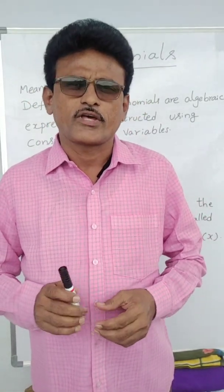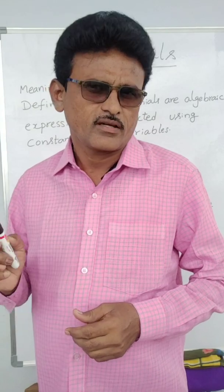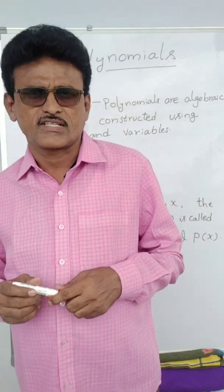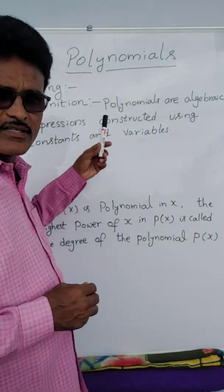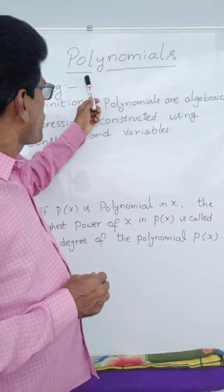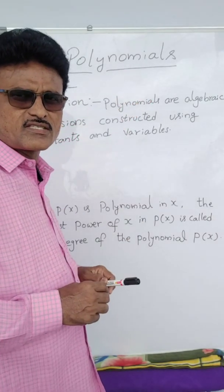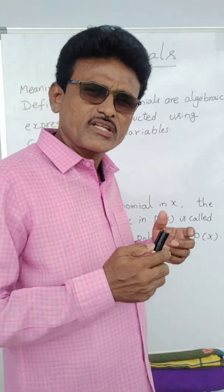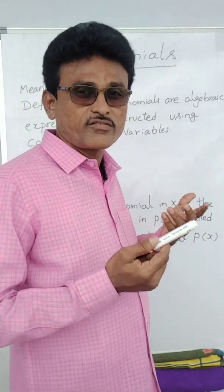Hi friends, today I am starting YouTube channel 'Easy Math by Uncle.' First I am going to start the polynomials lesson. First we will see the definition. Polynomials — two terms are there: 'poly' means many, 'nominal' means terms. So what is the meaning of polynomial? Many terms — so combination of terms.